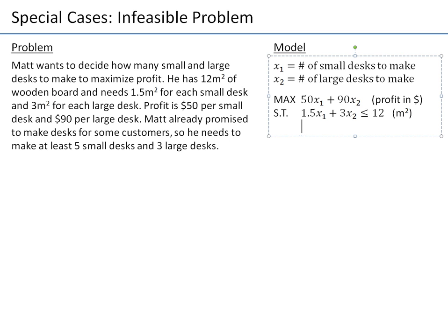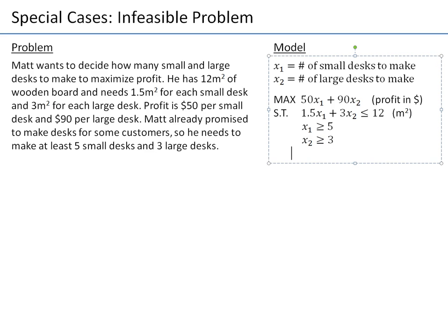What other constraints do I need? He needs a minimum of 5 small desks, so x1 ≥ 5, and he needs a minimum of 3 large desks, so x2 ≥ 3. This is the complete model. I don't need to add bounds of the form x1 ≥ 0, which would say don't make a negative number of desks, because that is already satisfied when x1 ≥ 5 — so that constraint is redundant. A constraint is redundant if it is satisfied because of other constraints.